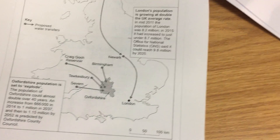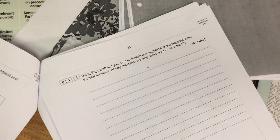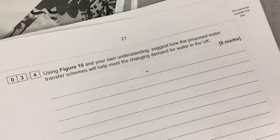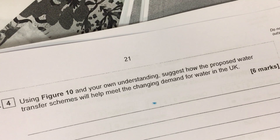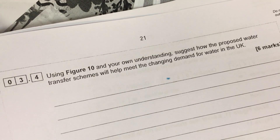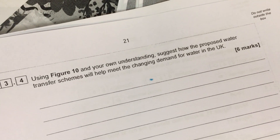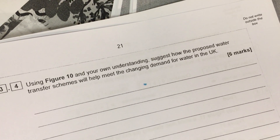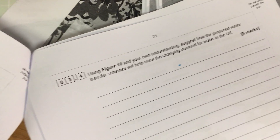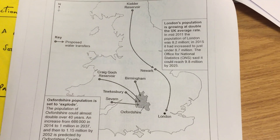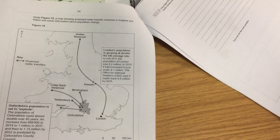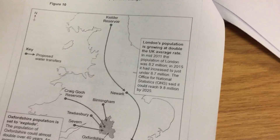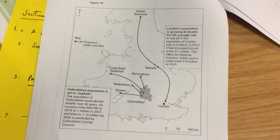Quote stuff from the figure into your answer. The proposed transfers would meet demand by transferring water to Oxfordshire and London. They also encourage other ideas - not just transferring the water, but ensuring buildings and toilets are water efficient, improving the pipes so there's no leakage and wasted water. They also try to encourage grey water to be recycled, and there are desalination schemes where salt is removed to provide fresh water. If they do all those things and move the water, the demand will be met. Absolutely crucial in a six-mark question: you must quote from the resource provided and use the figures.